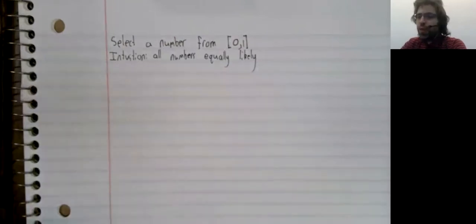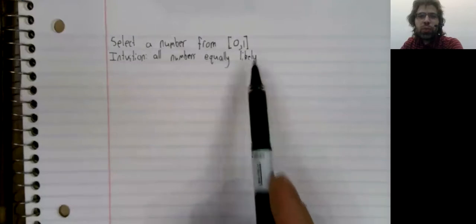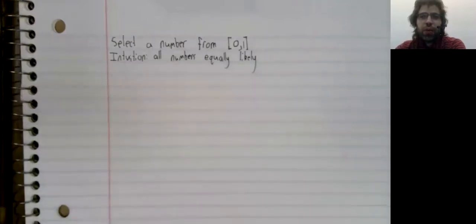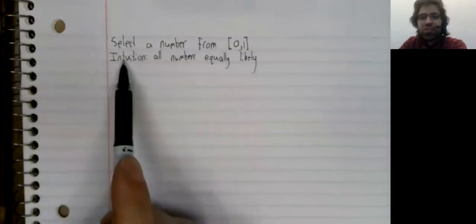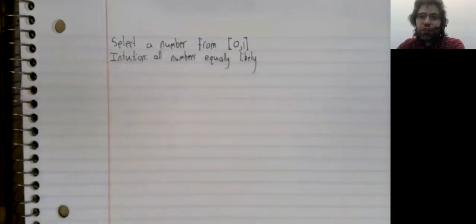Let us again consider a random variable that takes on values between 0 and 1, and let's try to maintain the intuition that all outcomes are equally likely. We have problematized that intuition, because this is always true for any continuous variable.